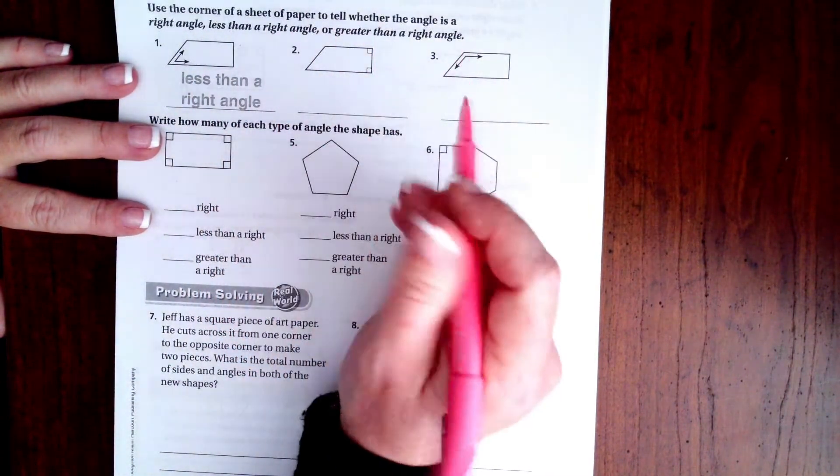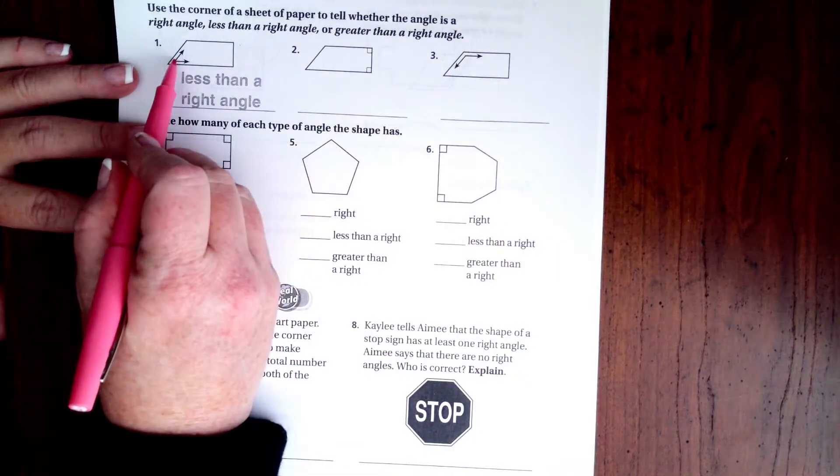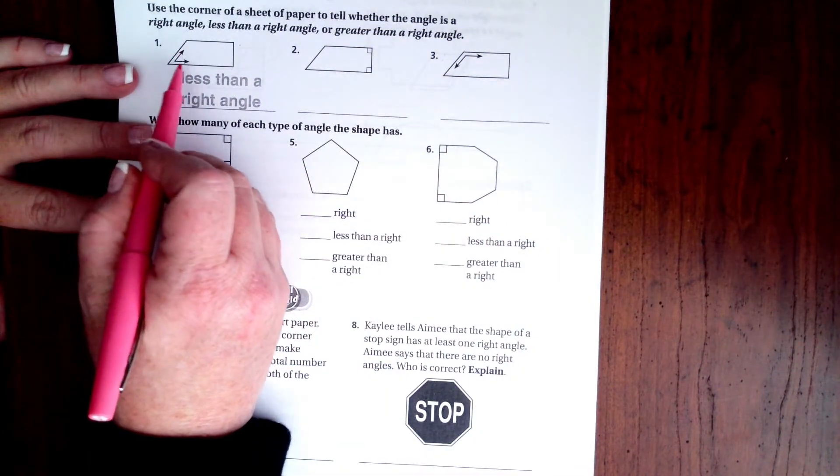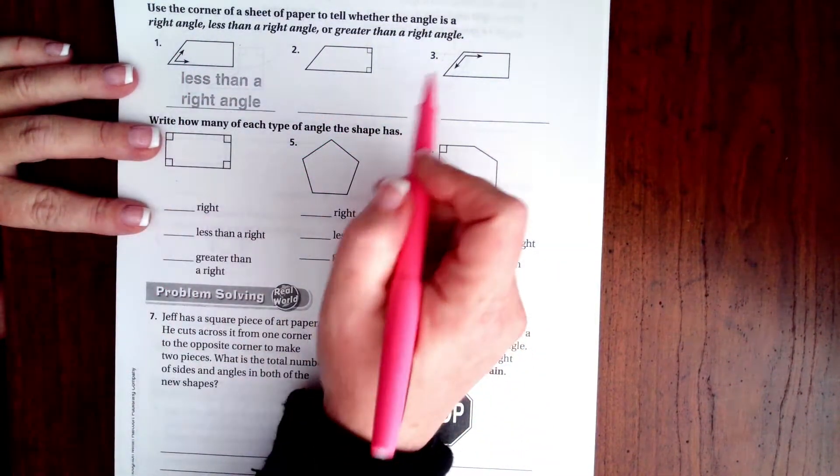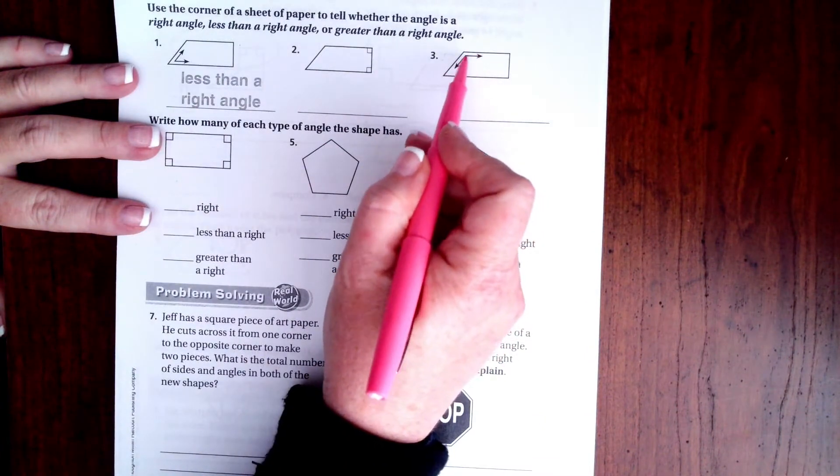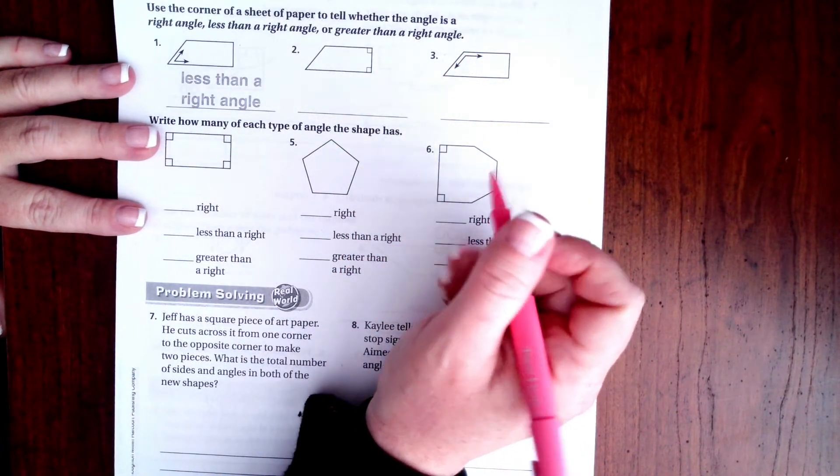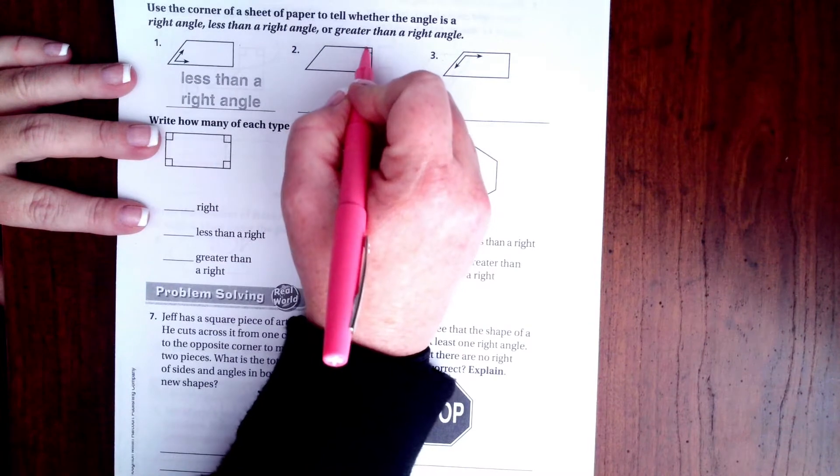If it is less than a right angle, so if it's smaller like these guys right here, this arrow right here is smaller, or if it's bigger like this guy right here.